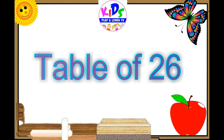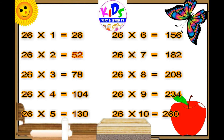Let's repeat. 26 ones are 26, 26 twos are 52, 26 threes are 78, 26 fours are 104, 26 fives are 130.